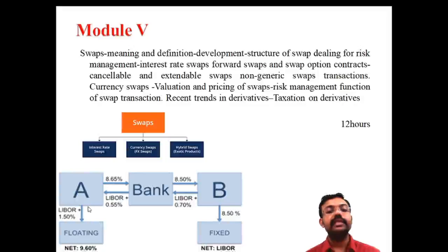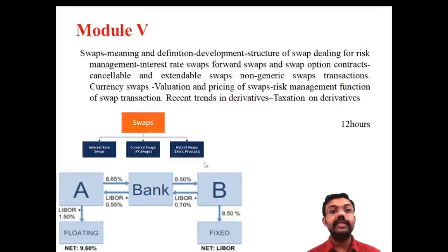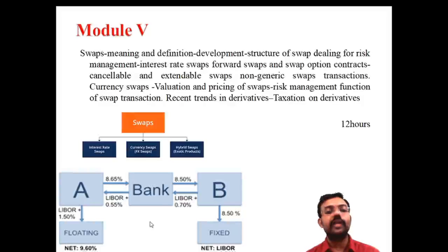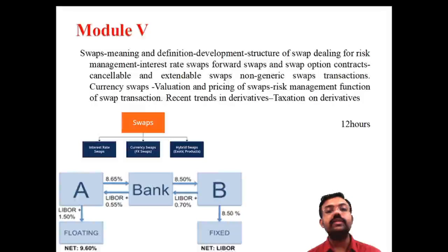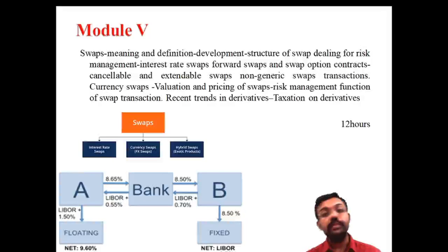This diagram shows a swap as an exchange. A and B are two important parties exchanging cash inflows through an intermediary — sometimes a bank. They are performing swap transactions through this intermediary. We discuss different types of swaps: interest rate swaps, currency swaps, and hybrid swap systems. The fifth module covers swap development, structure, categories of swaps, recent trends in the swap market, and taxation on derivatives.